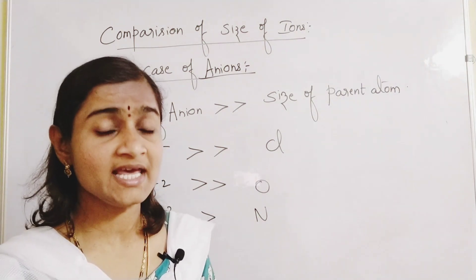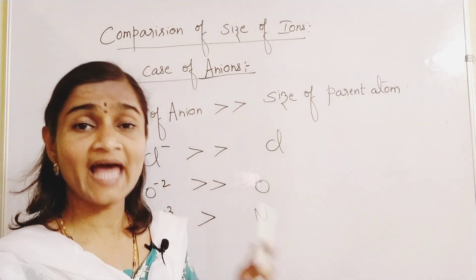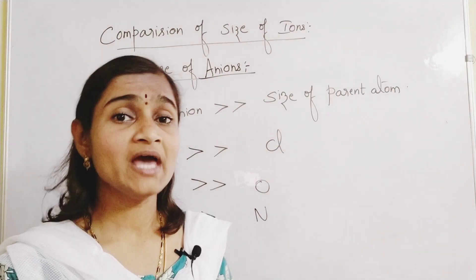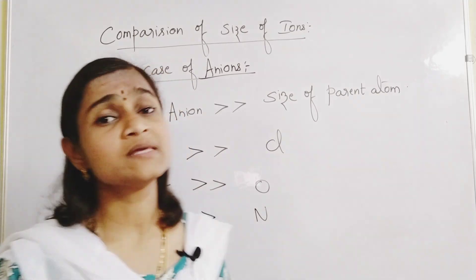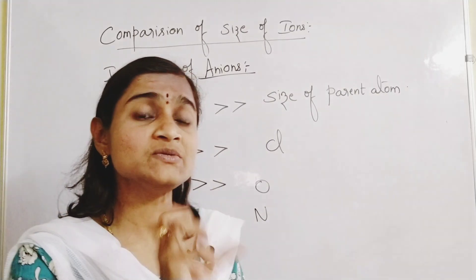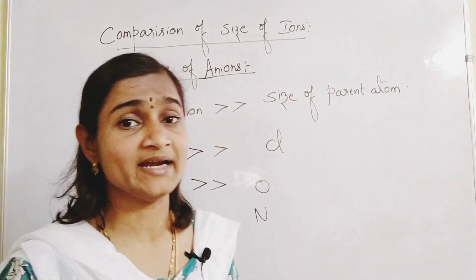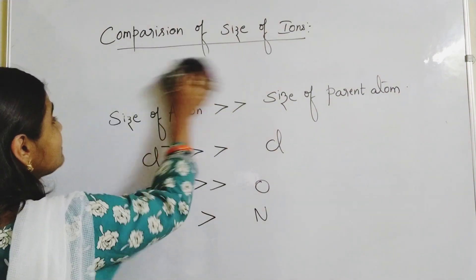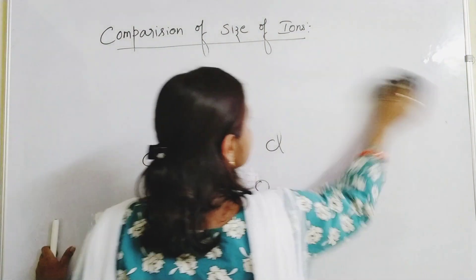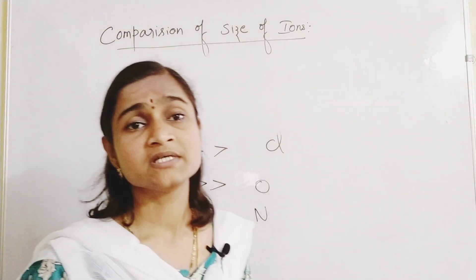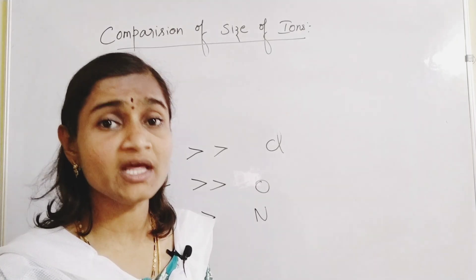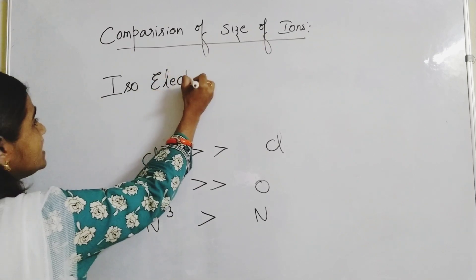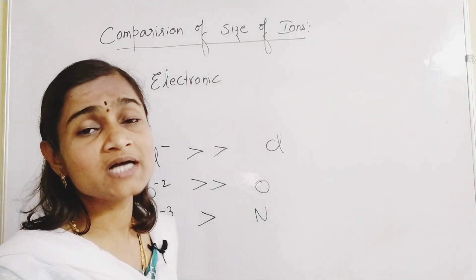Now you can also compare sizes between ions themselves. Sometimes questions ask you to compare sizes between ions — not just with the parent atom. Before we learn that, we need to learn about isoelectronic species, which is a very important concept — you will get two-mark questions on this.